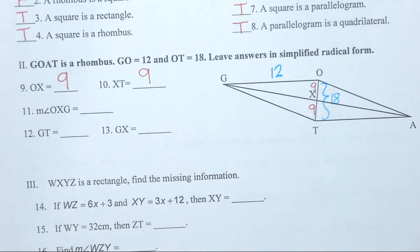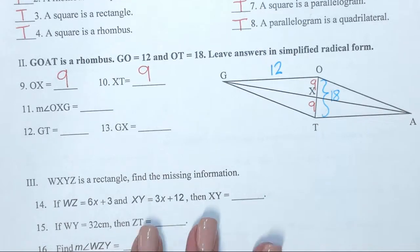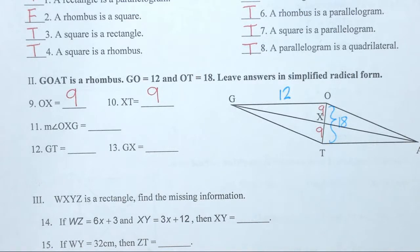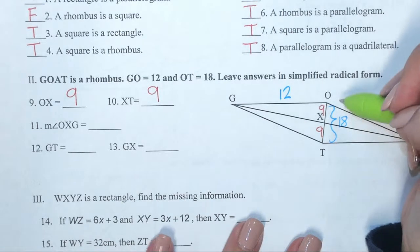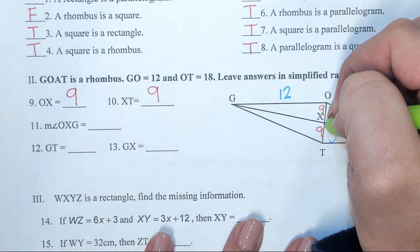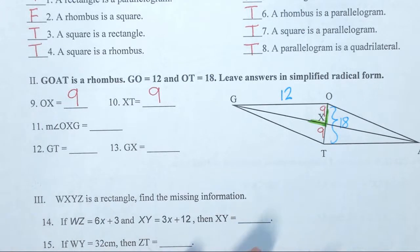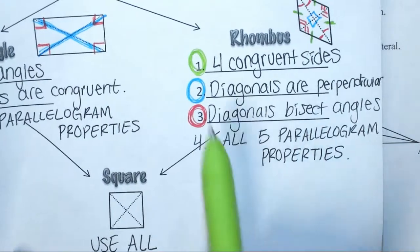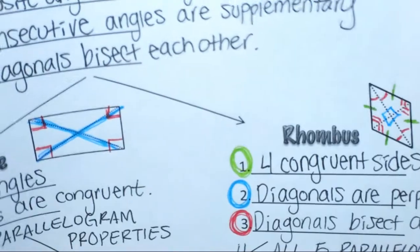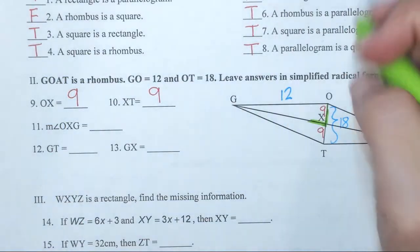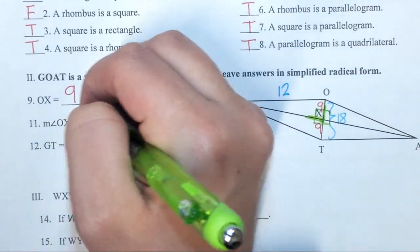Take 30 seconds and go answer number 11. Look at your properties. Angle OXG is right here — I'm trying to find how many degrees that is. It's 90 degrees. If you look at your rhombus properties, it says that the diagonals are perpendicular, which means that when they intersect they intersect at a 90-degree angle. So every single one of those angles right there is 90 degrees.